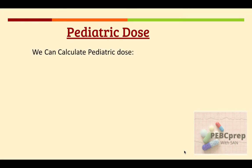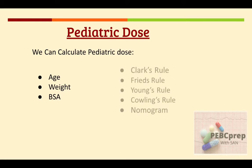We can calculate pediatric dose by age, weight, and body surface area. I will put a link on how to calculate body surface area in the description and in the eye button, so you can also watch that video specifically for body surface area. We have five formulas: Clark's rule, Fried's rule, Young's rule, Cowling's rule, and the nomogram.